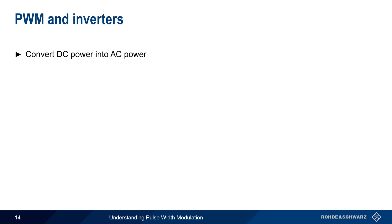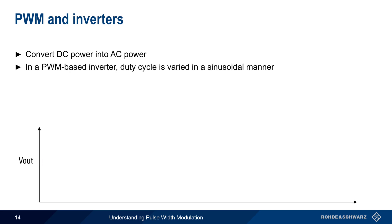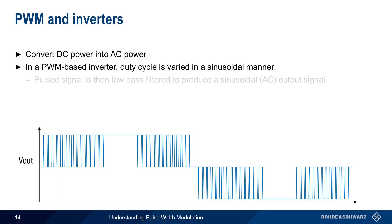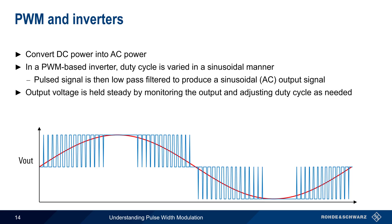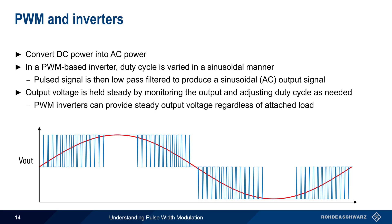DC to AC inverters also make use of pulse width modulation. In a pulse width modulation based inverter, duty cycle is varied in a sinusoidal fashion, and this pulse signal is then low-pass filtered to produce a smooth AC output signal. This is similar to our previous example of audio signals. And similar to switch mode power supplies, the output voltage can be held steady under changing load conditions by monitoring the output voltage and adjusting the duty cycle as necessary. This ability to provide a steady output in the face of different load conditions makes pulse width modulation-based inverters superior to conventional DC to AC inverters.